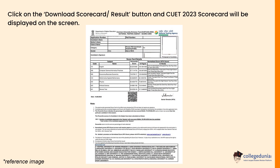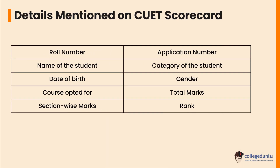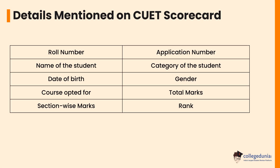Here you can click on the download scorecard result button and the CUET 2023 scorecard will be displayed on the screen. Let's check what details are mentioned on the CUET scorecard: roll number, application number, name of the student, category of the student, date of birth, gender, course applied for.